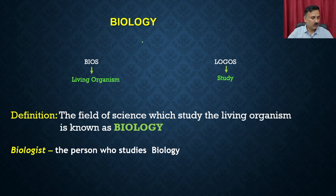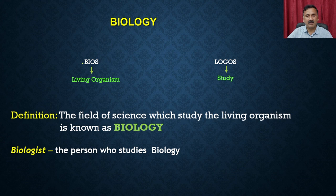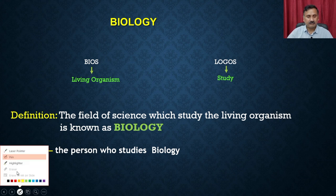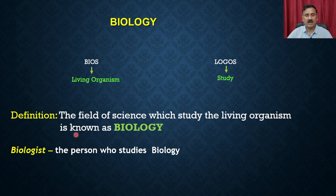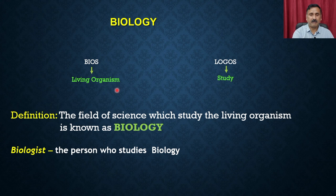We will start with a very basic question: what is biology? Biology is a field of science where you deal with the different aspects of living organisms. As the name suggests, biology is a combination of two words — one is called 'bios' and the other is called 'logos.' Bios means living organisms whereas logos means study. So biology is the field of science which studies the living organism.